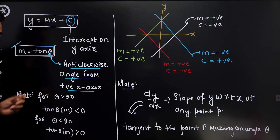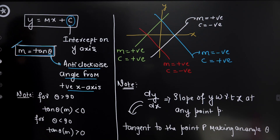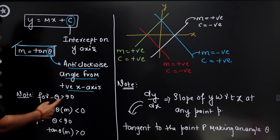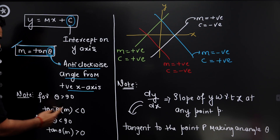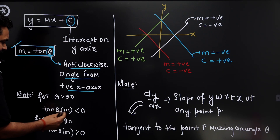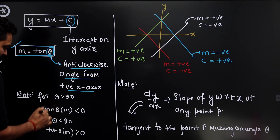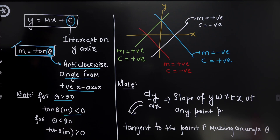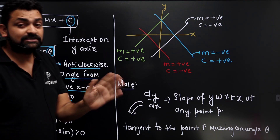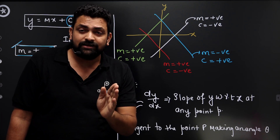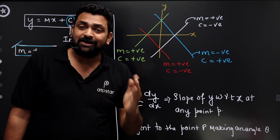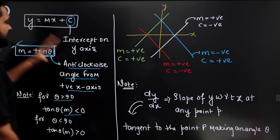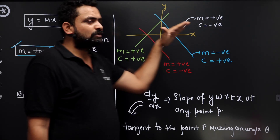If theta is more than 90 degrees, then tan(theta) is negative — and we call tan(theta) the slope. So if theta is more than 90, slope is negative. If theta is less than 90, slope is positive. Based on this, I have designed four lines. All lines have different c and different m values.